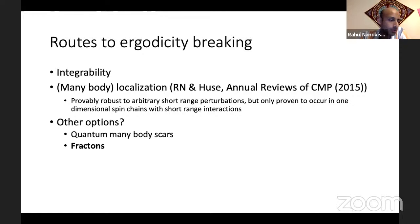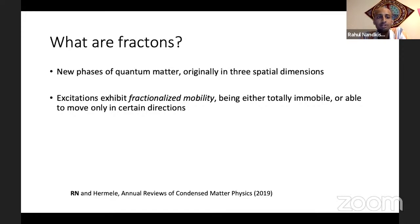But are there other routes to ergodicity breaking that don't rely on either integrability or many-body localization? Two topics which are very topical are quantum many-body scars and fractons. Fractons will be the main thing that I'll talk about. So what are fractons? Well, fractons are a new kind of quantum phase of matter.